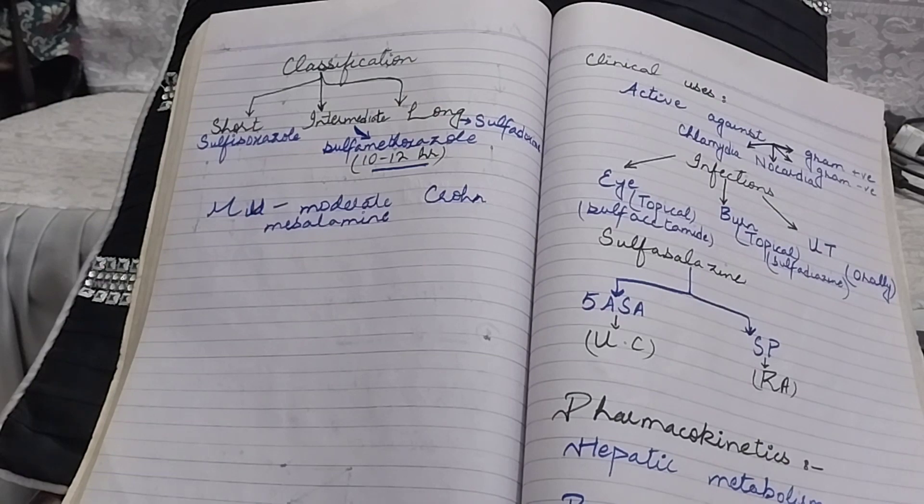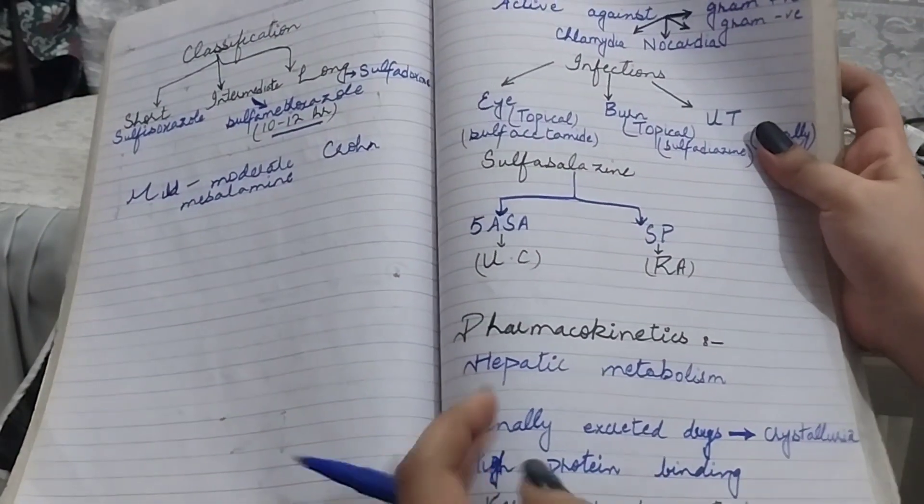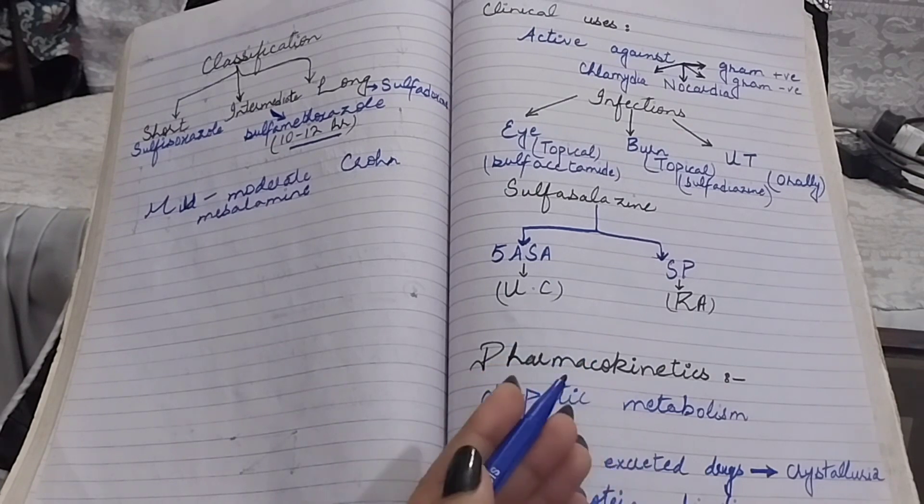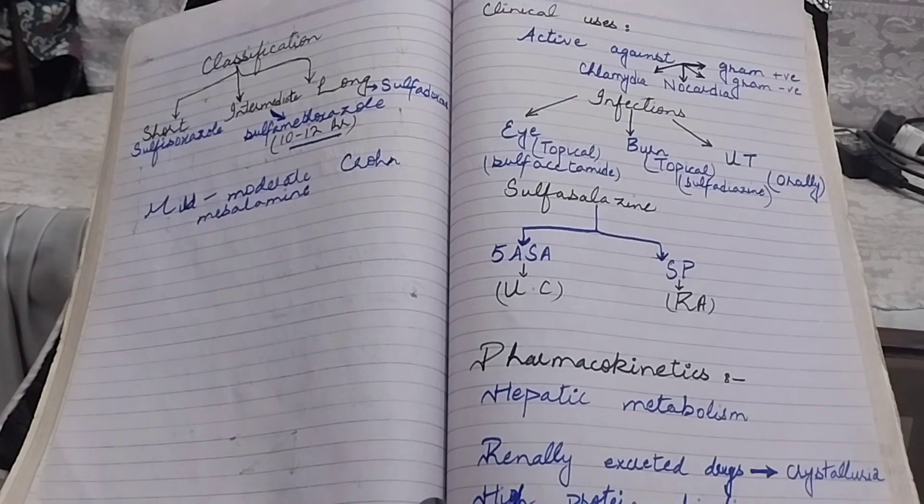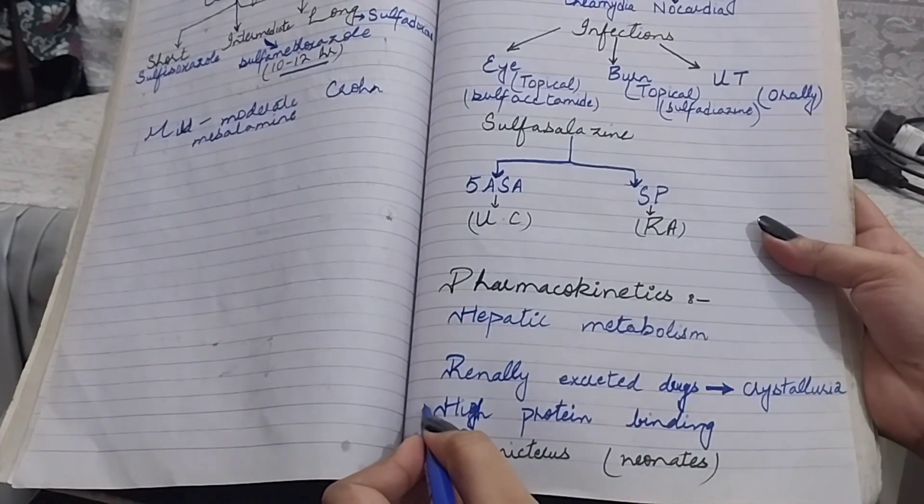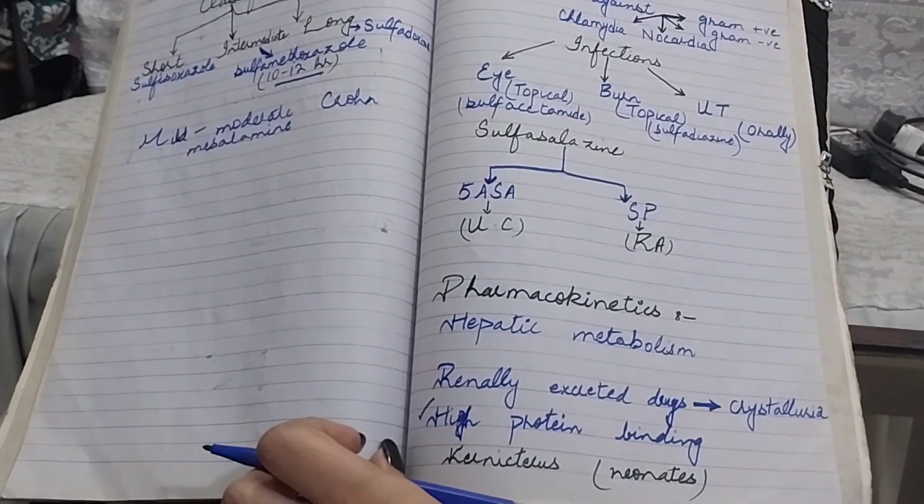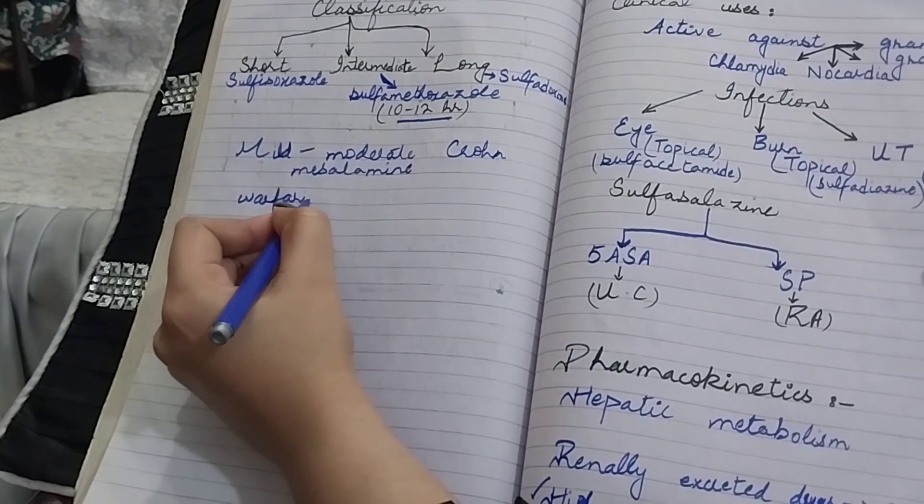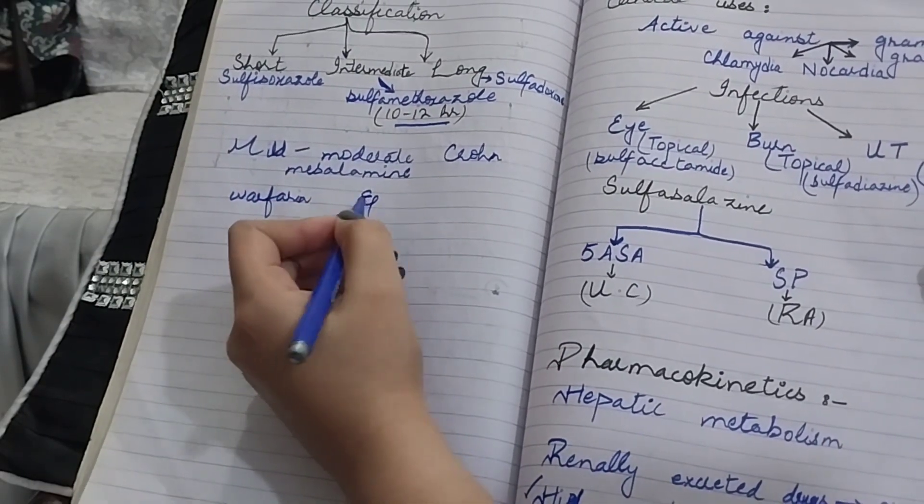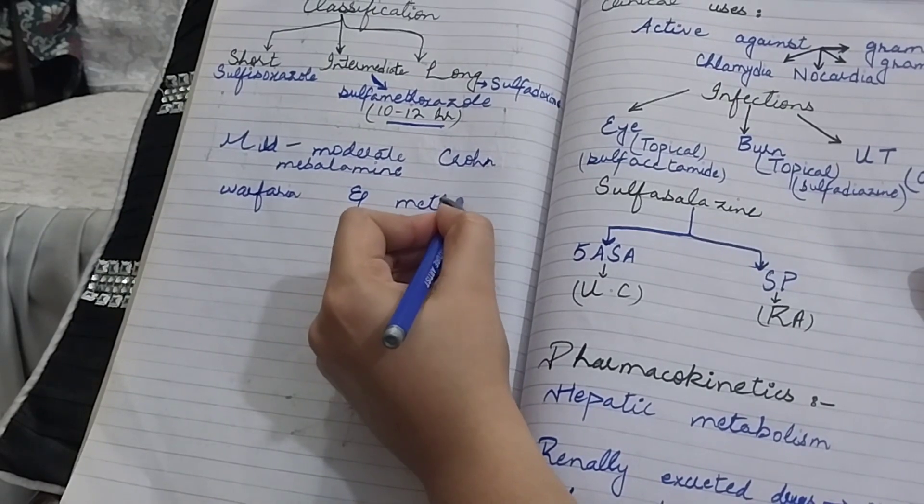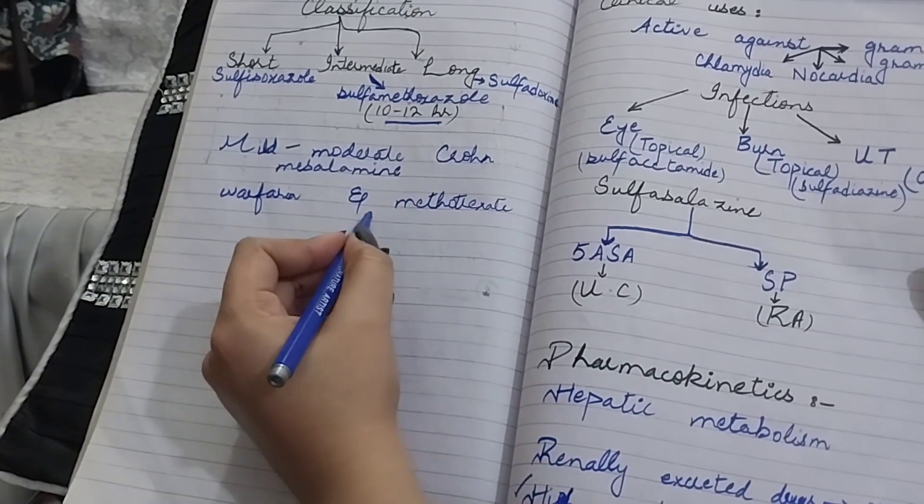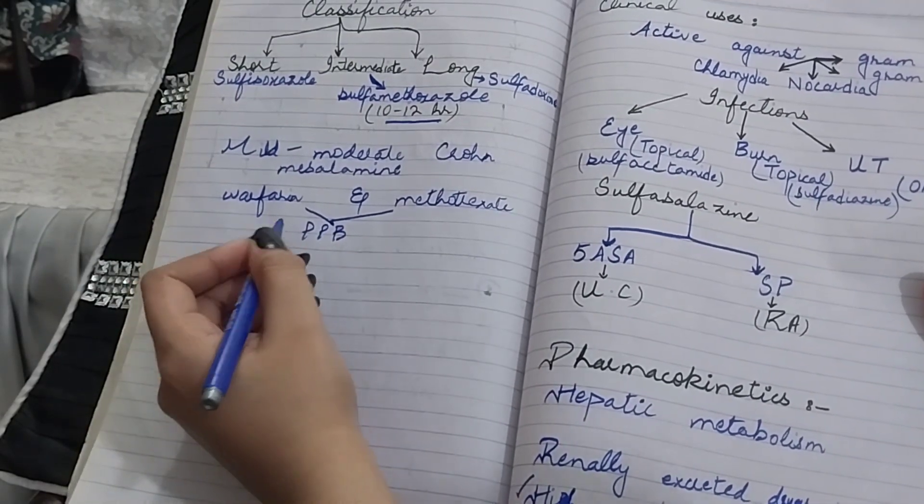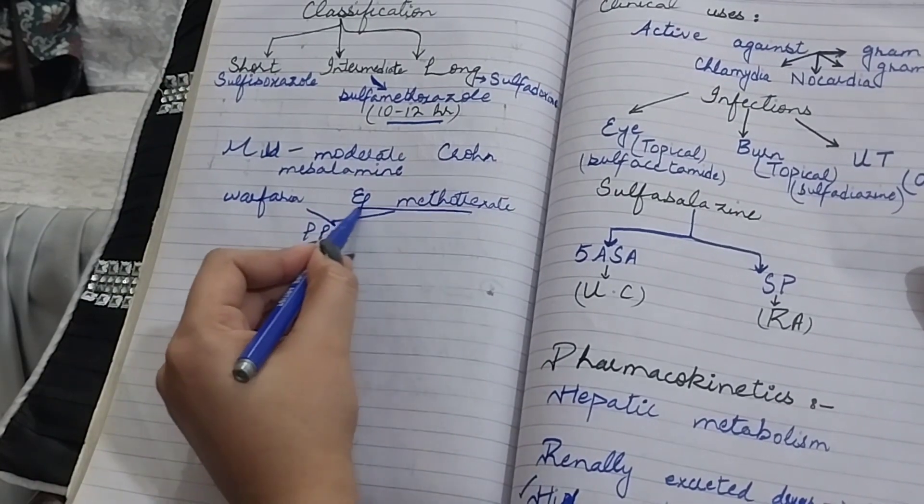Let's see the pharmacokinetics of sulfonamides. They are hepatically acetylated drugs, renally excreted. Metabolites of sulfonamides cause crystalluria. They have high protein binding. The competition of sulfonamide with warfarin and methotrexate for plasma protein binding transiently increases the plasma concentration of these drugs.